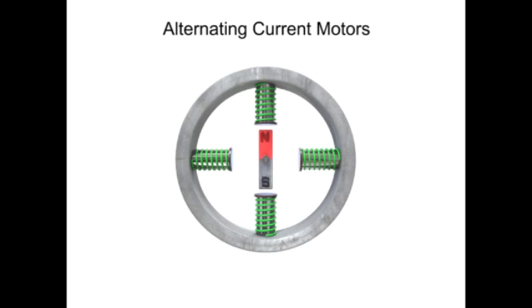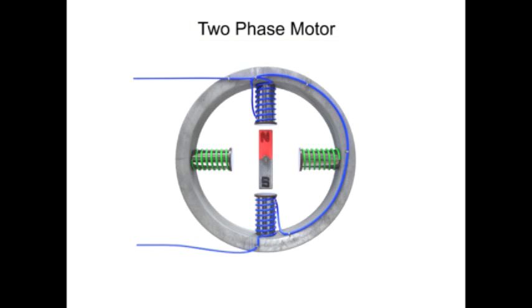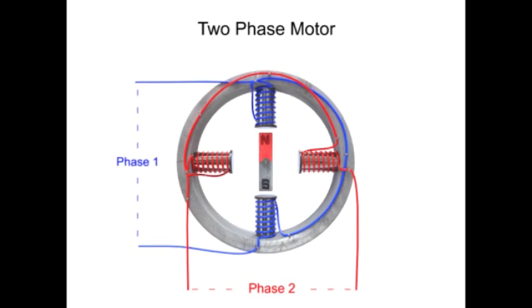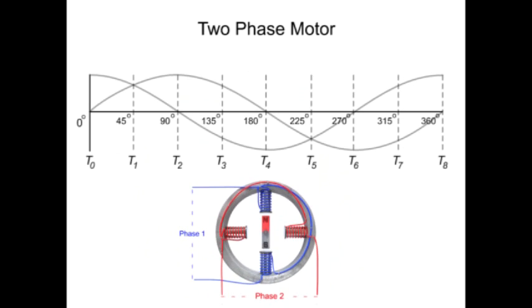This illustration of a two-phase motor has a pair of stators connected to one sinusoidal AC input referred to as phase one and a pair of stators connected to a second sinusoidal AC input referred to as phase two. The two sinusoidal waves are 90 degrees out of phase. This phase discrepancy is the key to creating rotation of the rotor.